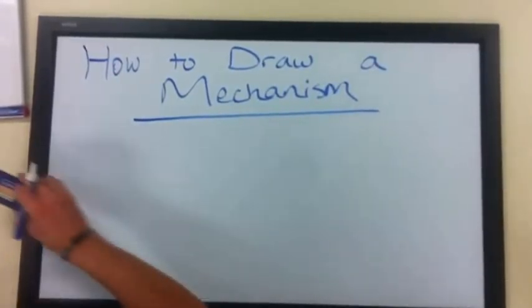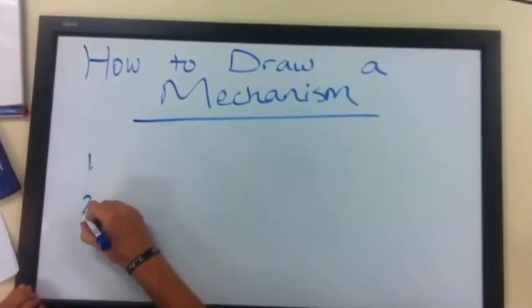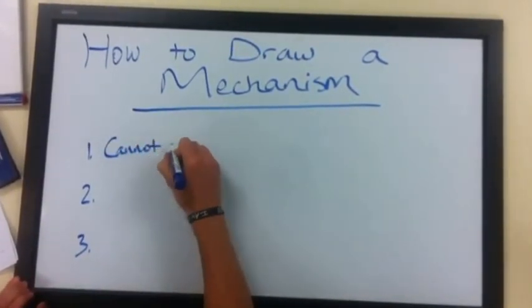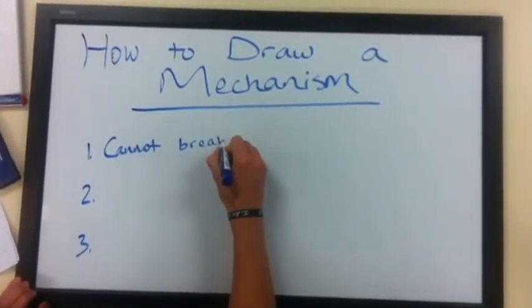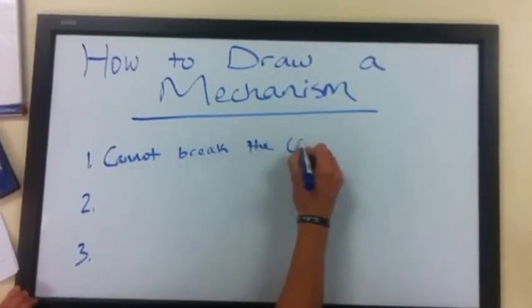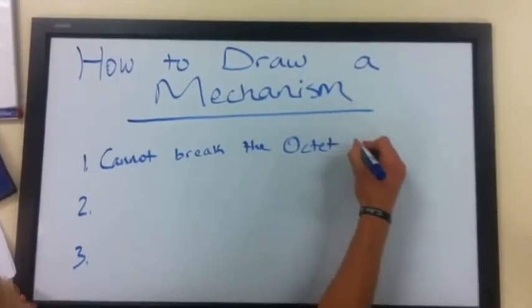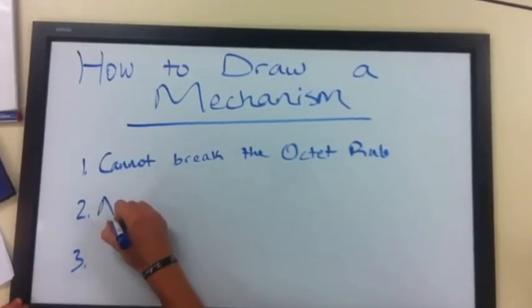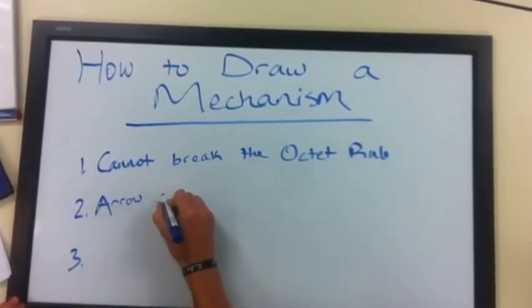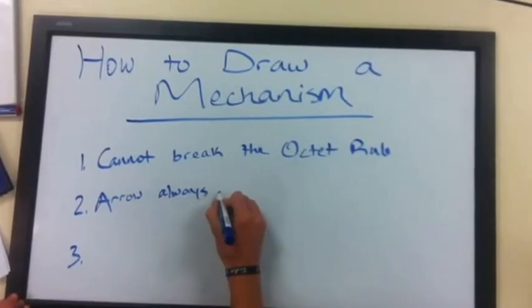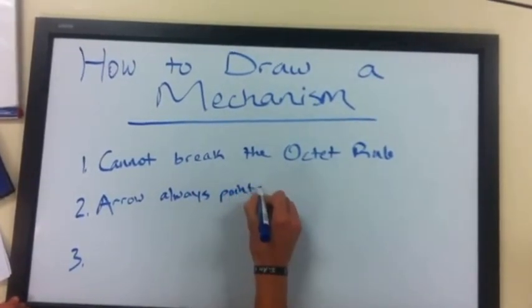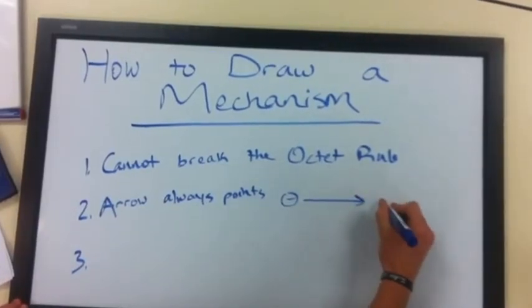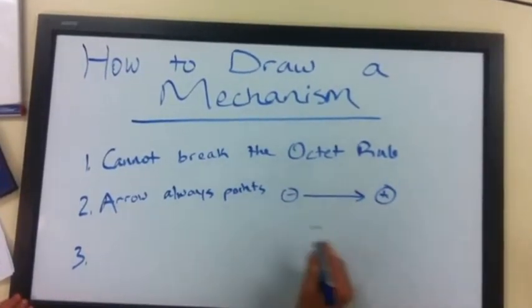There are three basic rules to drawing a mechanism. First, you cannot break the octet. Second, the curved arrow always points from a more negative substance to a more positive substance, never the reverse.